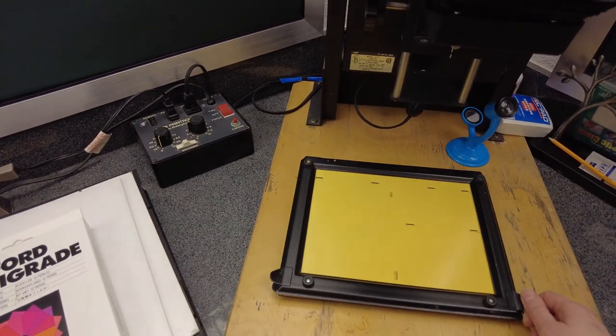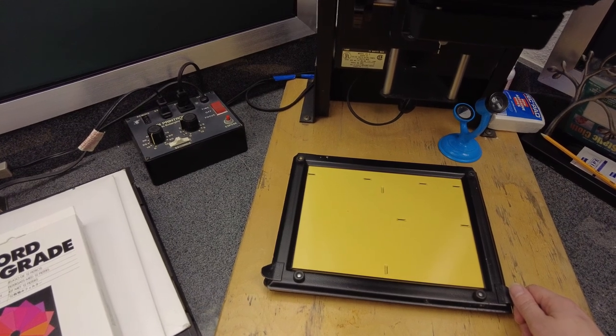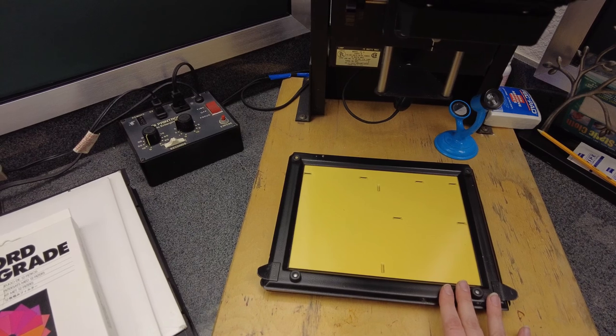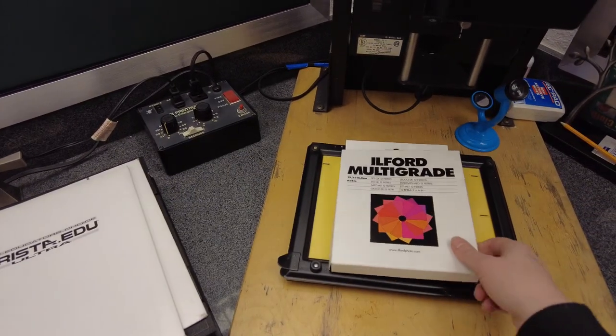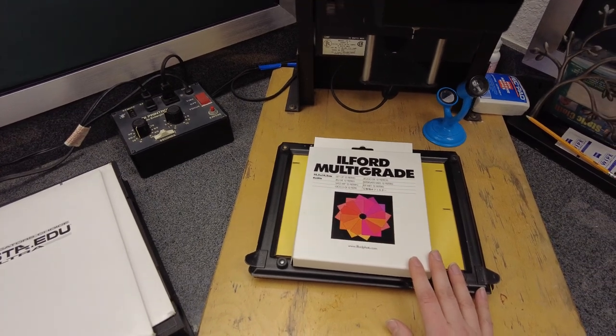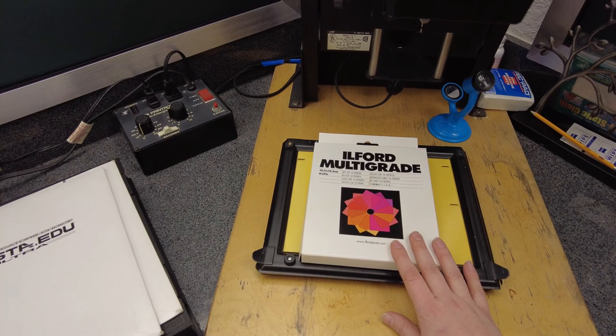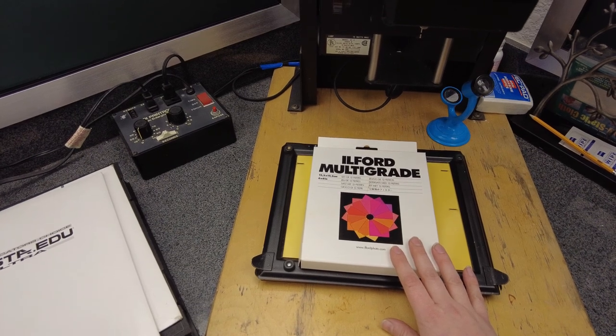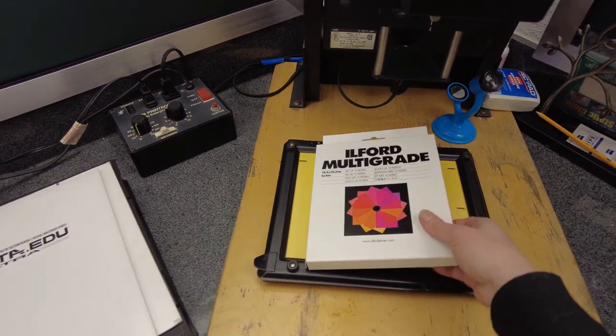It would work the same way and would need to be cut specifically to the size that you are using for your photo paper. The other thing that you need is filters. Putting filters into your enlarger is going to make sure that you have the ability to adjust the contrast. Some enlargers will have something built into it. This one does not.